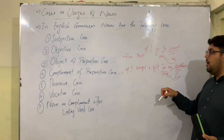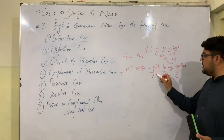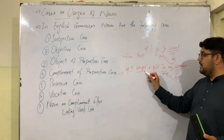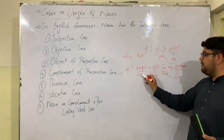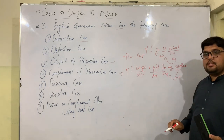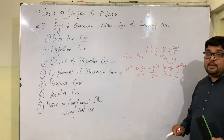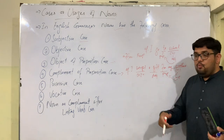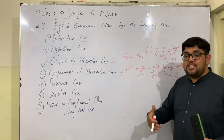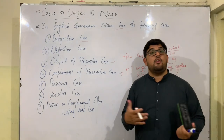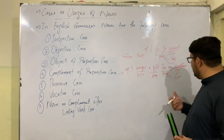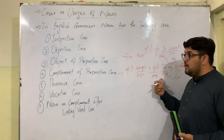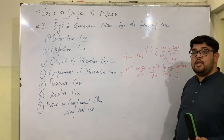In this sentence we have two objects: a direct object and an indirect object. The sentence contains a ditransitive verb, which takes both a direct and an indirect object. The indirect object also functions as a complement. So here, the indirect object functions as the complement of preposition case. This is the fourth case of noun.